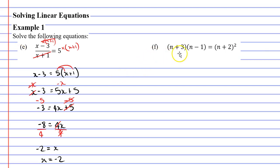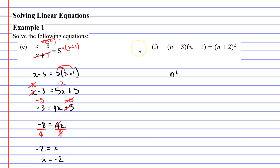We'll now move on to question F. You'll notice we've got quite a lot of brackets here, and as I've mentioned, brackets are a pain to work with, so as soon as I see them I want to expand them. These are monic quadratics — if you don't know how to expand monic quadratics, look up one of my previous videos. Let's expand now: n times n gives us n squared; n times negative 1 gives us minus 1n; positive 3 times n gives us plus 3n; and positive 3 times negative 1 gives us minus 3.